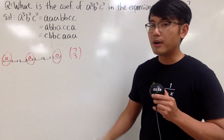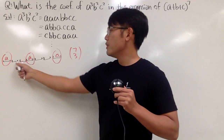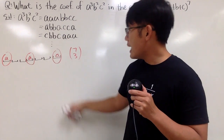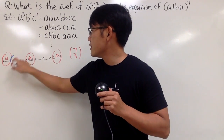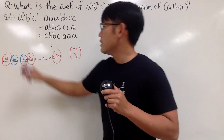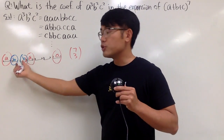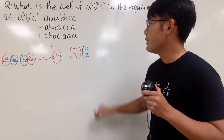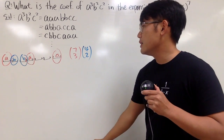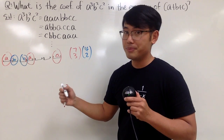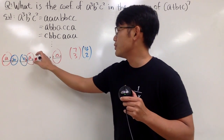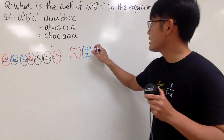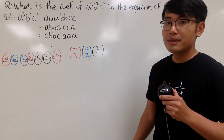Next, we have to think about how many ways we can choose two spots for the B's. That would be four choose two — we have four spots left and have to choose two for the B's. And lastly, you have two choose two for the remaining spots, which will be the positions for the C's.